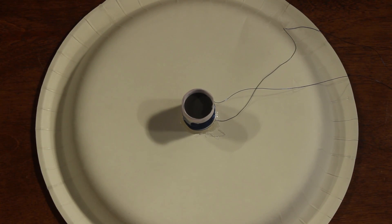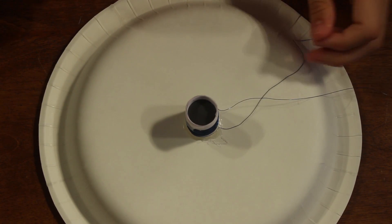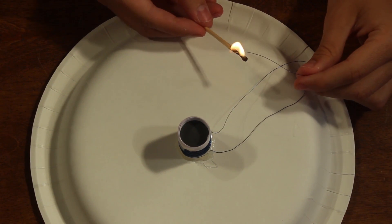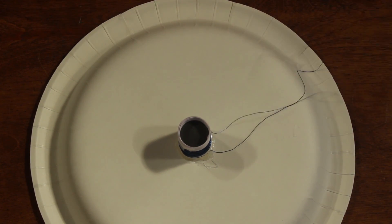Step number five is to take off and strip the very ends of the wire. The easiest way to do that is to take a lighter or a match and simply burn, in my case, the blue insulator on the wire to reveal the silver wire underneath.